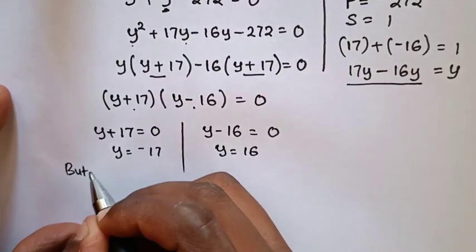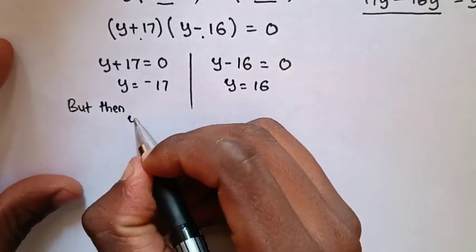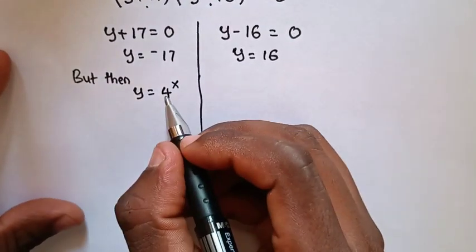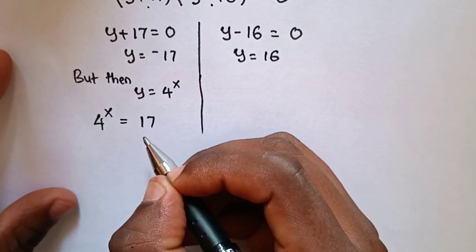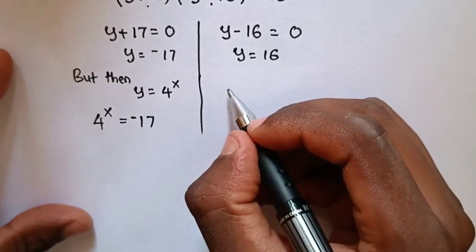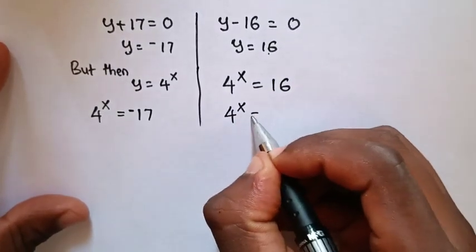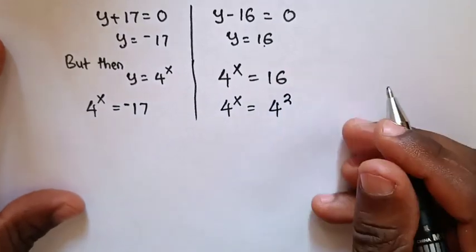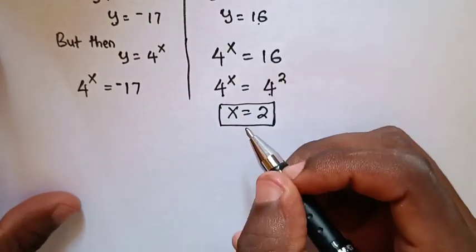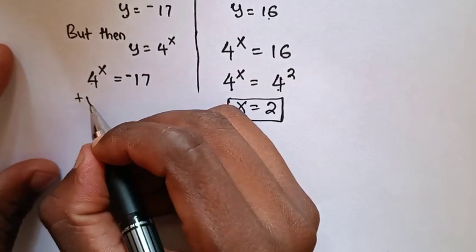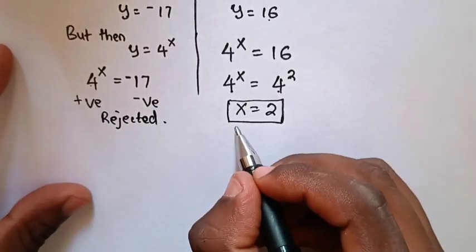Since we let y equal to 4 power x, we substitute back. For the first case, 4 power x equals negative 17 — but 4 power x is always positive, so negative 17 is rejected. For the second case, 4 power x equals 16 equals 4 squared. Comparing with the same base but different powers, x equals 2. So the only value of x is 2.